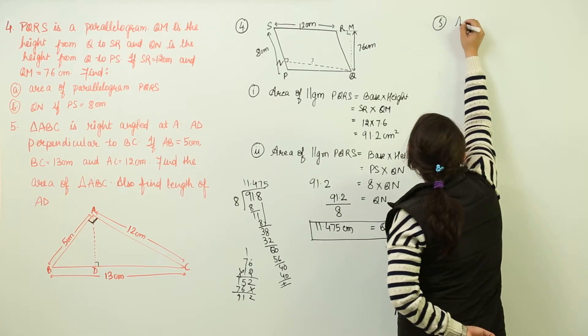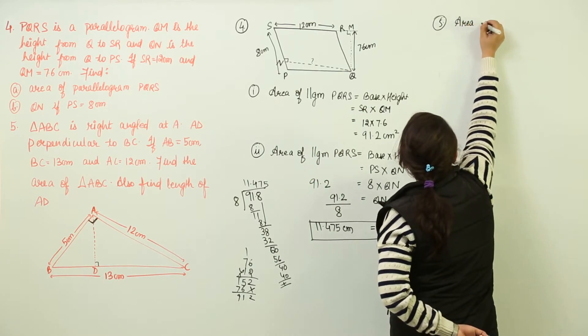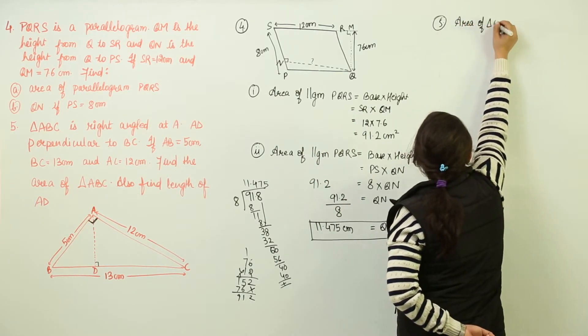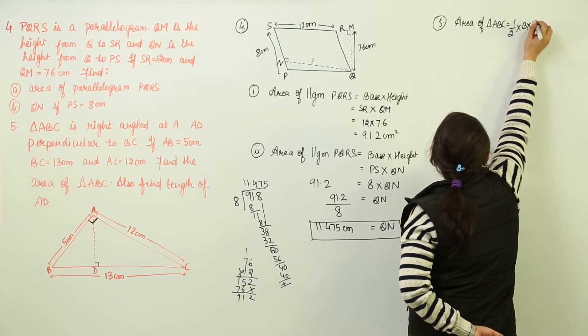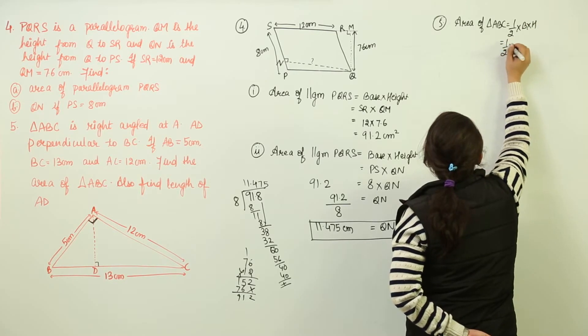We have to find the area of ABC. So because ABC is a triangle, we can write area of triangle ABC as 1 by 2 into base into height.